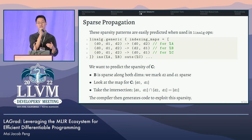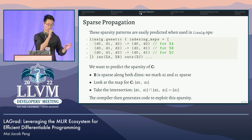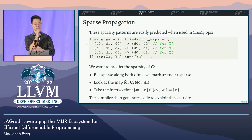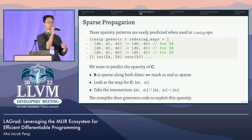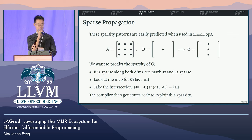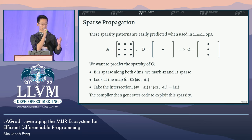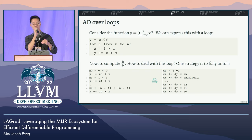Bringing this back to the linalg dialect: when we have sparse operands to linalg ops, it's very easy to statically predict the sparsities of our outputs. To predict the sparsity of C in our matrix multiplication, we look at the indexing maps for all inputs — B is sparse along both dimensions, so we mark d2 and d1 sparse — then look at the output map for C which has d0 and d1. The intersection is just d1, matching our earlier visual example where the first dimension of C is dense and the second is sparse. We can then generate code that takes advantage of sparsity by skipping over known sparse dimensions.